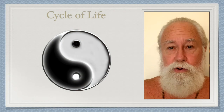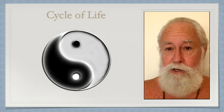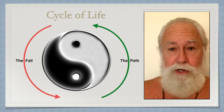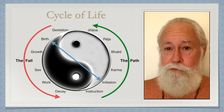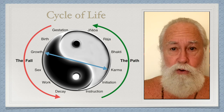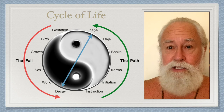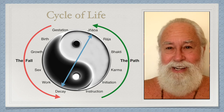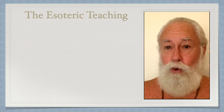You recall in the first video we showed how the Esoteric Teaching has two sides — the fall and the path — and how they are a complementary or mirror image of one another. Each step in the fall becomes or is transformed into a step on the path, and that ultimately brings us to enlightenment or self-realization. In this episode we're going to talk about exactly how that works.